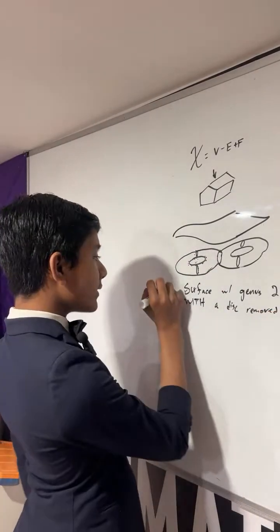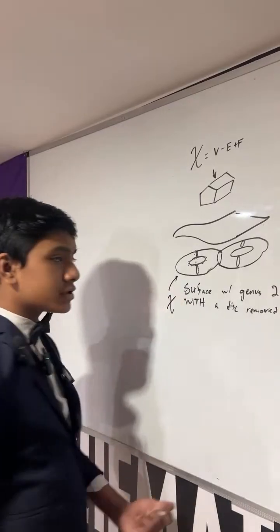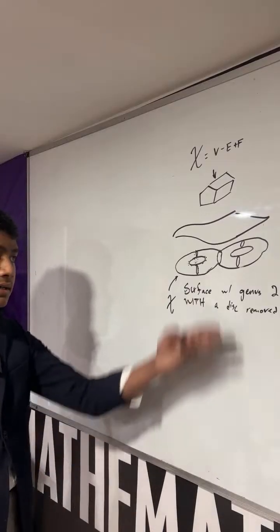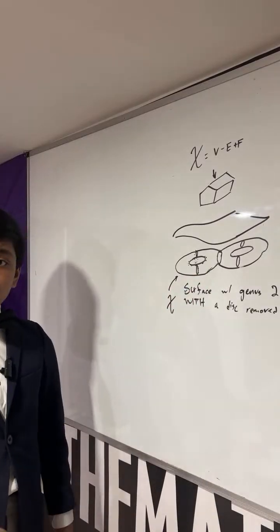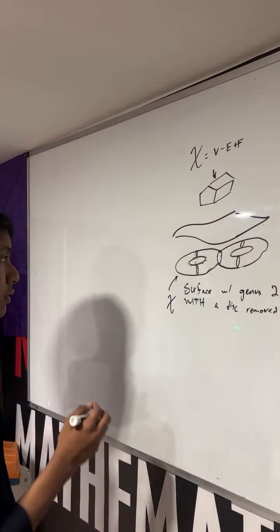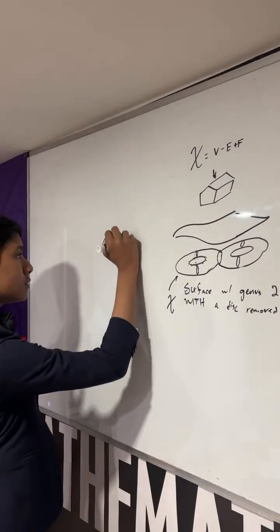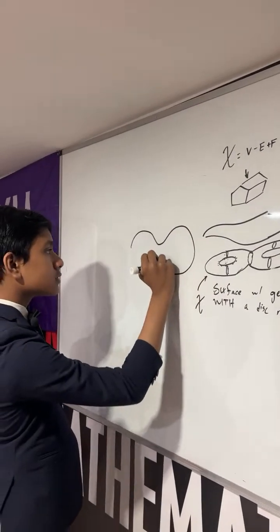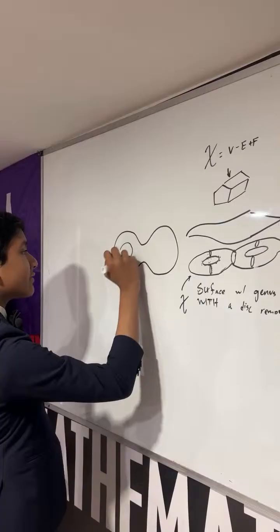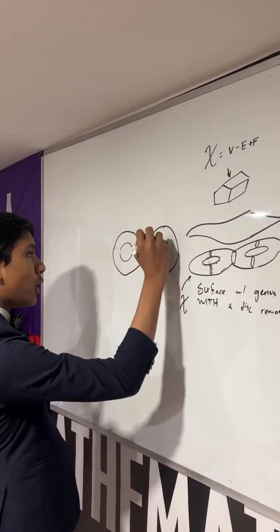So we're trying to find the Euler characteristic of this — but where would you even begin? What are the vertices, edges, and faces of this construction? Here's how you can go about it. First of all, think of just the regular surface of genus 2. You don't even have to think about removing that open disk, and I'll show you why later.